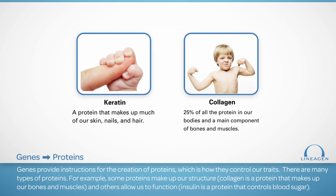Genes provide instructions for the creation of proteins, which is how they control our traits. There are many types of proteins — some make up our structure and others allow us to function. For example, some genes provide instructions for the creation of collagens, which are proteins that form our bones and muscles. Other genes provide instructions for the creation of insulin, which is a protein that controls levels of blood sugar.